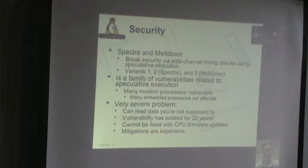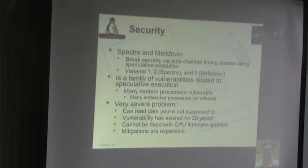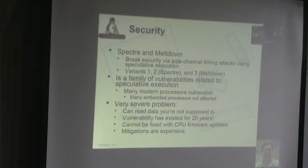This is a very severe problem. It allows a process to read data it should not have access to — user space should not have access to kernel data, and one process should not have access to another process's data. The big problem is that most CPU security bugs can be fixed with a firmware update via microcode, but that's not the case for this whole class of speculative execution bugs. The mitigations are very expensive in terms of slowing down the processor, and cloud providers were frightened of a 5% to 30% reduction in performance.